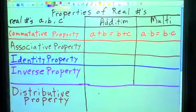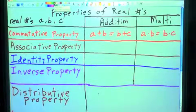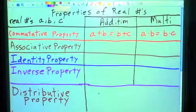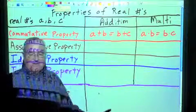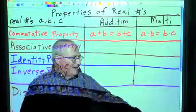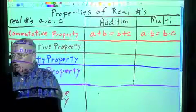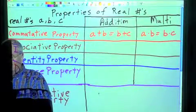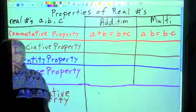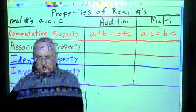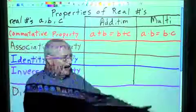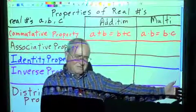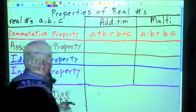Now let's talk about the associative property. The associative property is a little easier — it's who you associate with. I can stand right here and have a neighbor right here, somebody sitting right here, and then I can associate with this person. I now associate with this one. I haven't moved or changed positions, but I'm associated with that person. Or I can associate with this person. And that's this concept here.